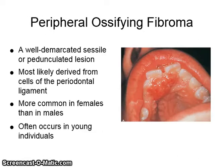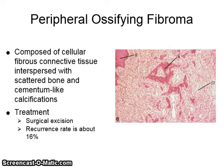Peripheral odontogenic tumors include peripheral ossifying fibroma and other peripheral odontogenic tumors. The peripheral ossifying fibroma is a well-demarcated sessile or pedunculated lesion most likely derived from cells of the periodontal ligament. It is more common in females than in males and often occurs in young individuals. Microscopically, it is composed of cellular fibrous connective tissue interspersed with scattered bone and cementum-like calcifications. It is treated with surgical excision and the recurrence rate is about 16%.